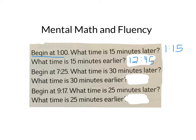Begin at 7:25. What time is it 30 minutes later? 7:55. What time is it 30 minutes earlier? 30 minutes earlier than 7:25 would be 6:55.